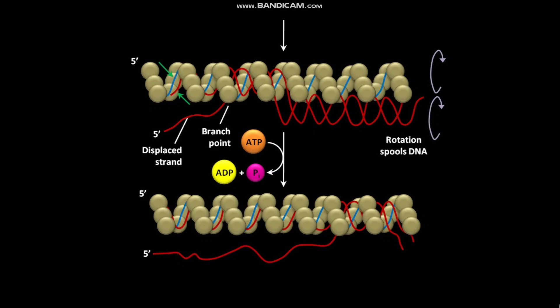This rotation causes three things: branch migration from left to right, DNA strand exchange from left to right, and DNA strand separation.